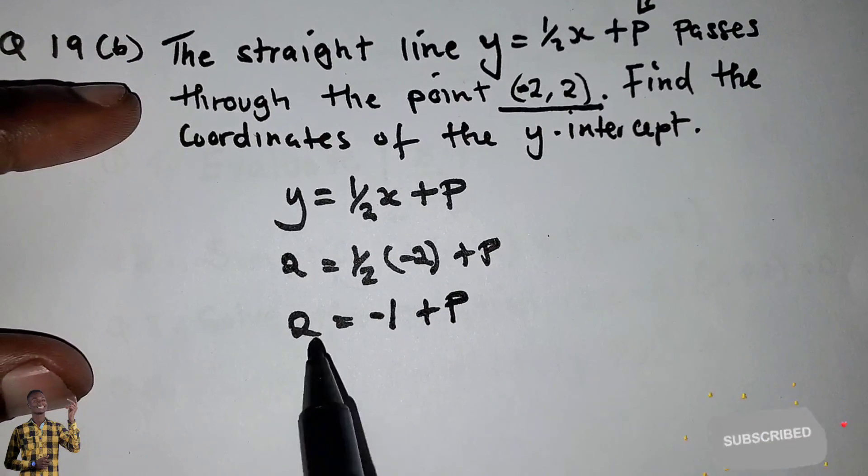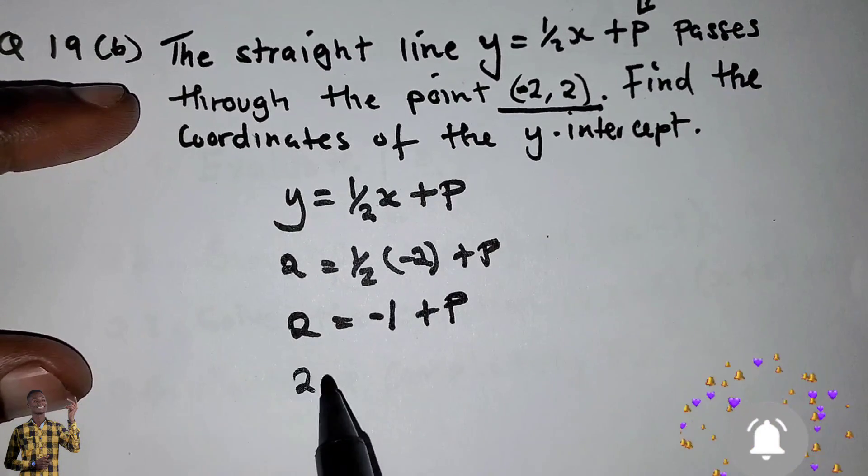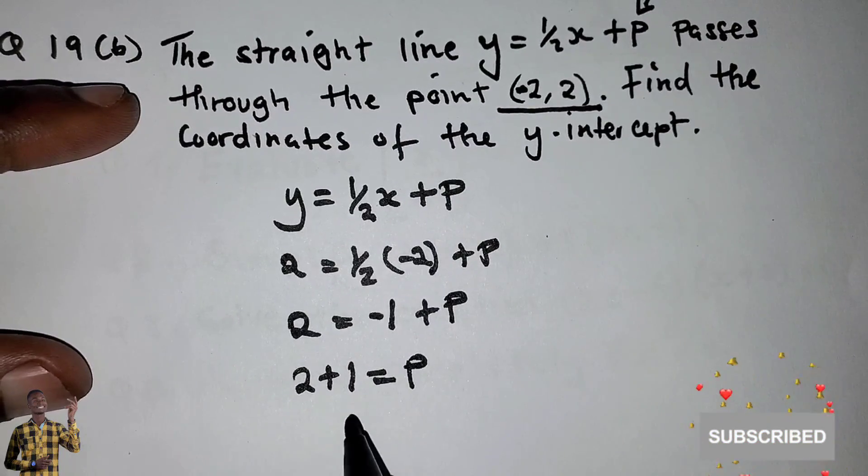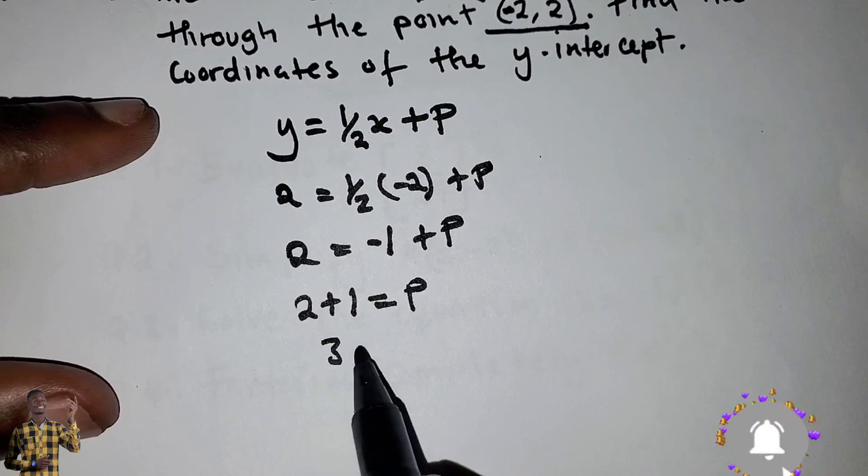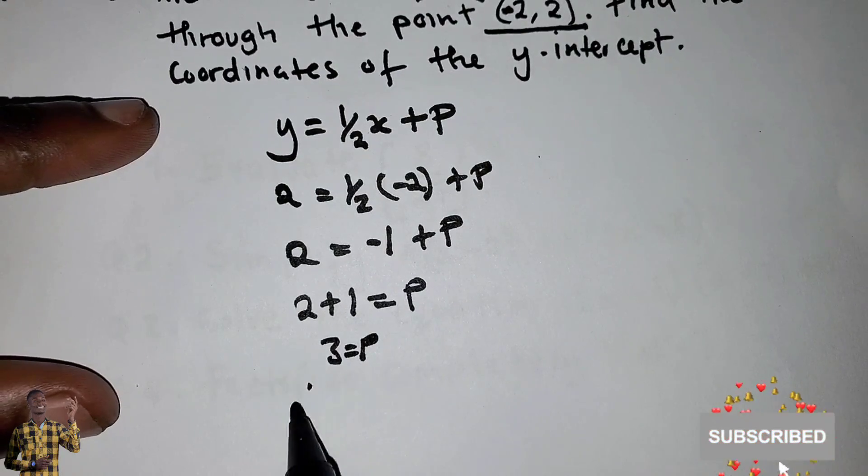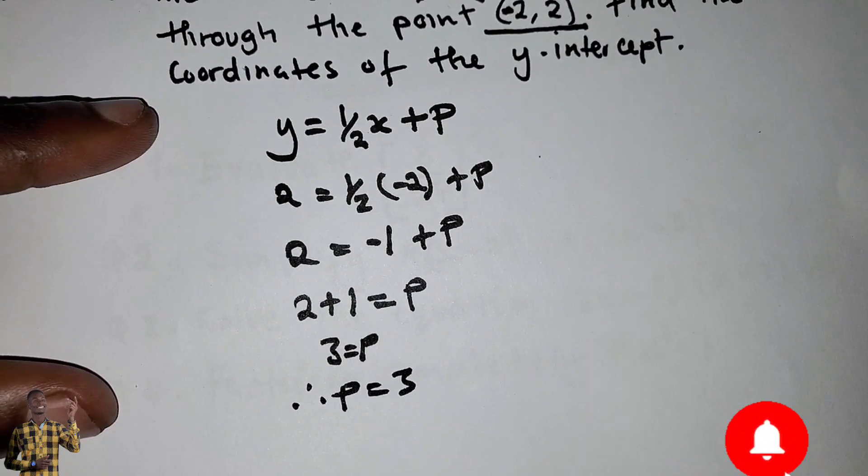We solve for P. This crosses over: 2 plus 1 equals P, so 3 equals P. Therefore P equals 3.